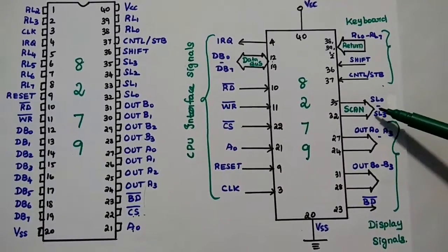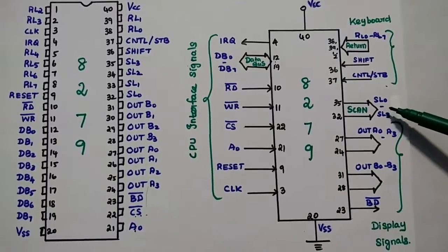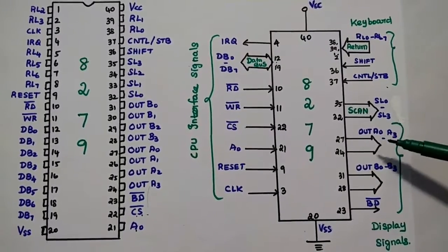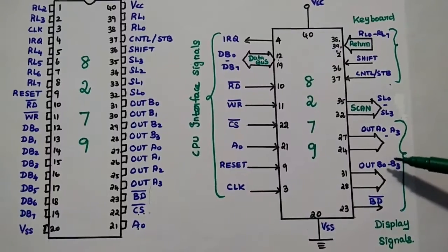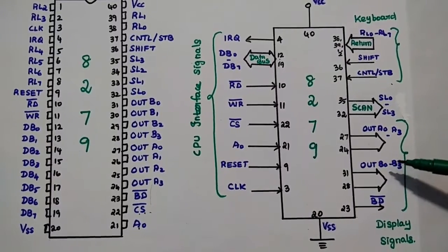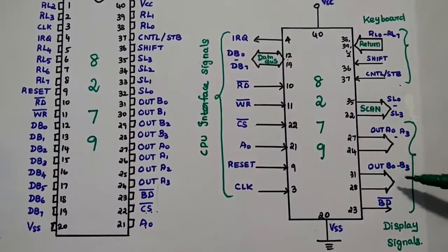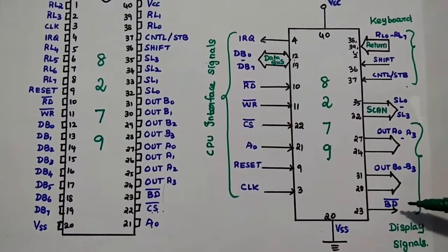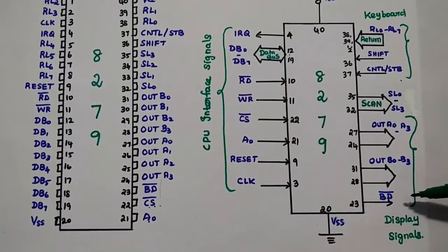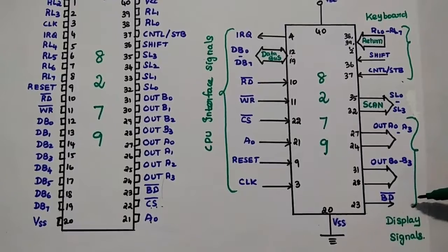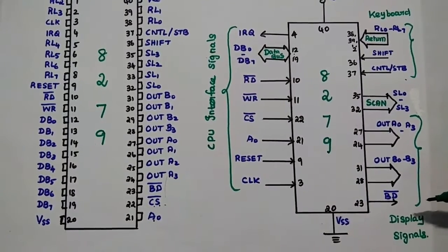Next are the scan lines, mainly used to scan the data. Two 4-bit output lines are available, making 8 output lines total. Finally, BD bar is the blank detect signal used to detect the blank space in the display.